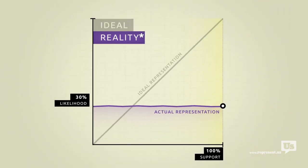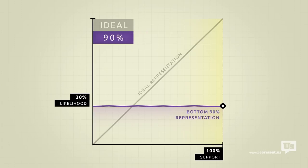But there's a catch. This flat line only accounts for the bottom 90% of income earners in America. Economic elites, business interests, people who can afford lobbyists, they get their own line.